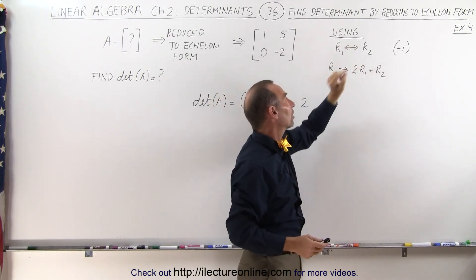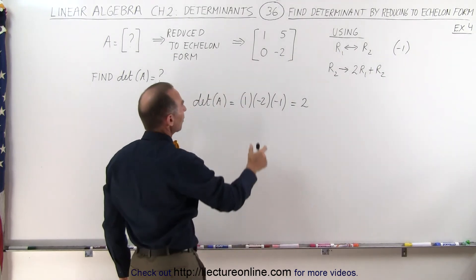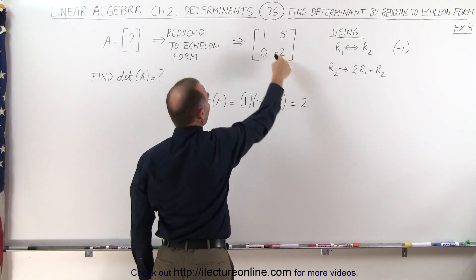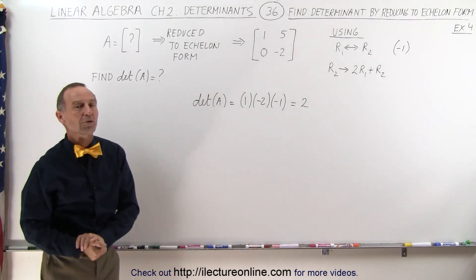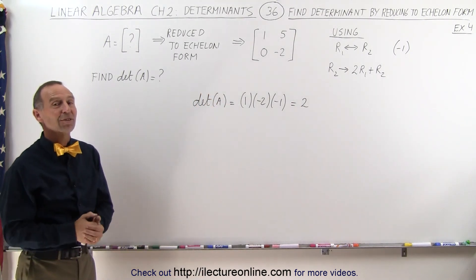Only one adjustment for a single row exchange, meaning you have to multiply the product of the diagonals times that negative 1 to get the proper answer, the correct answer for the determinant. And that's how it's done.